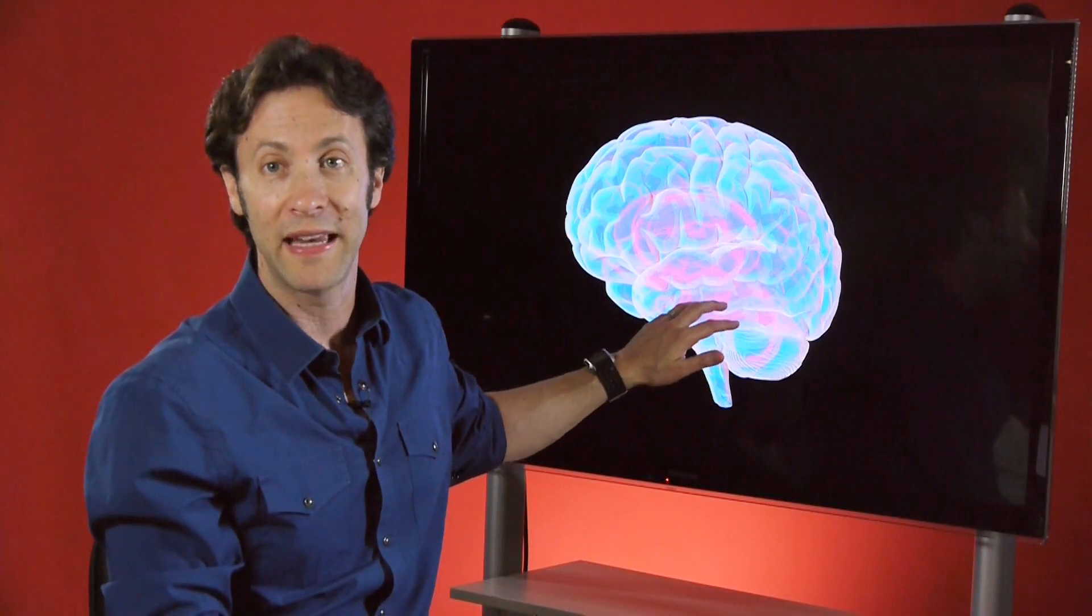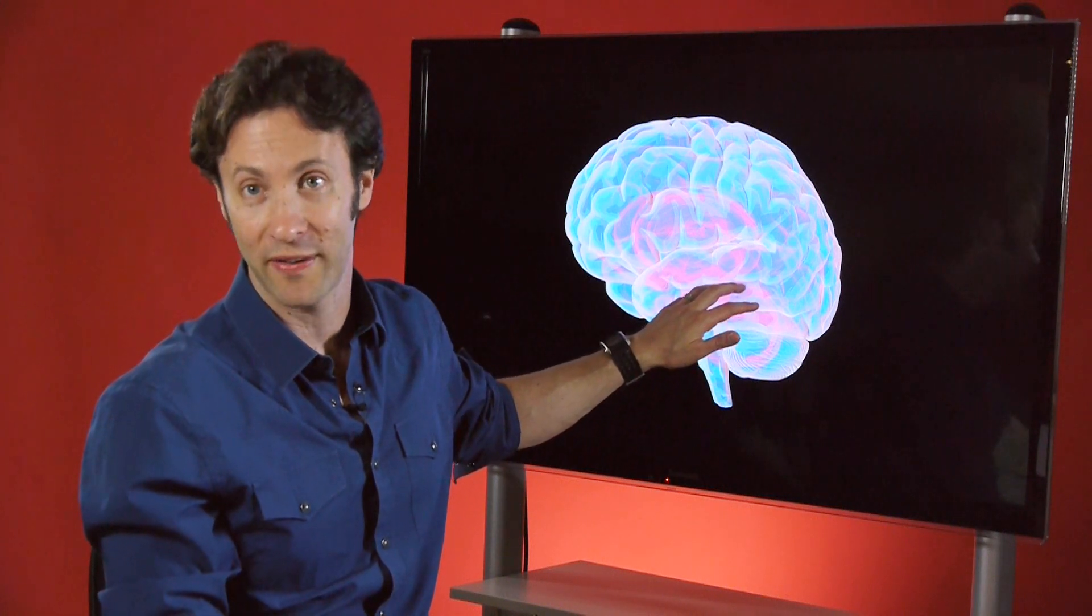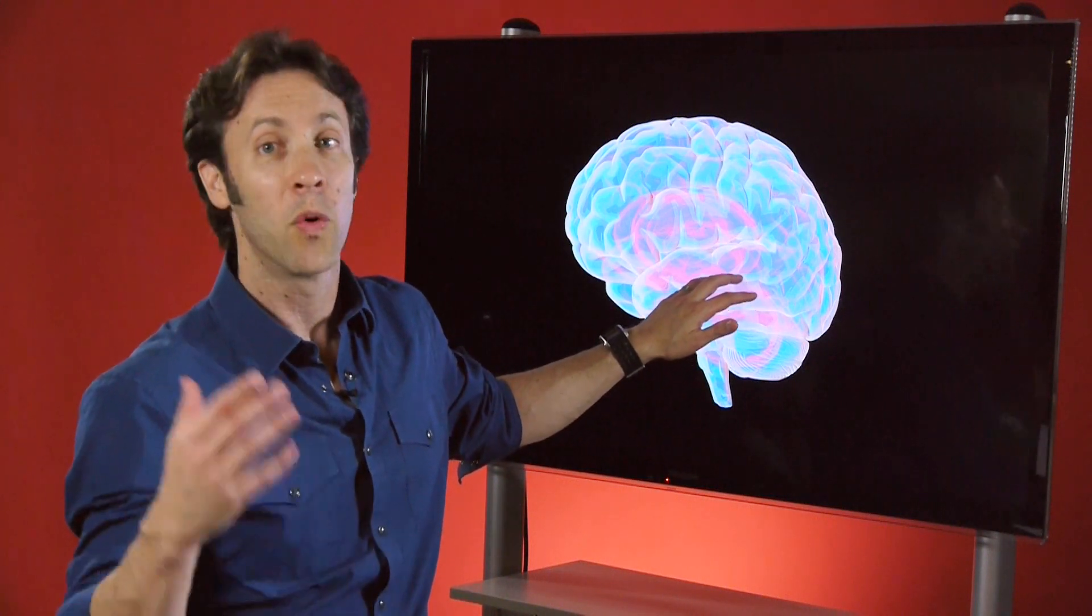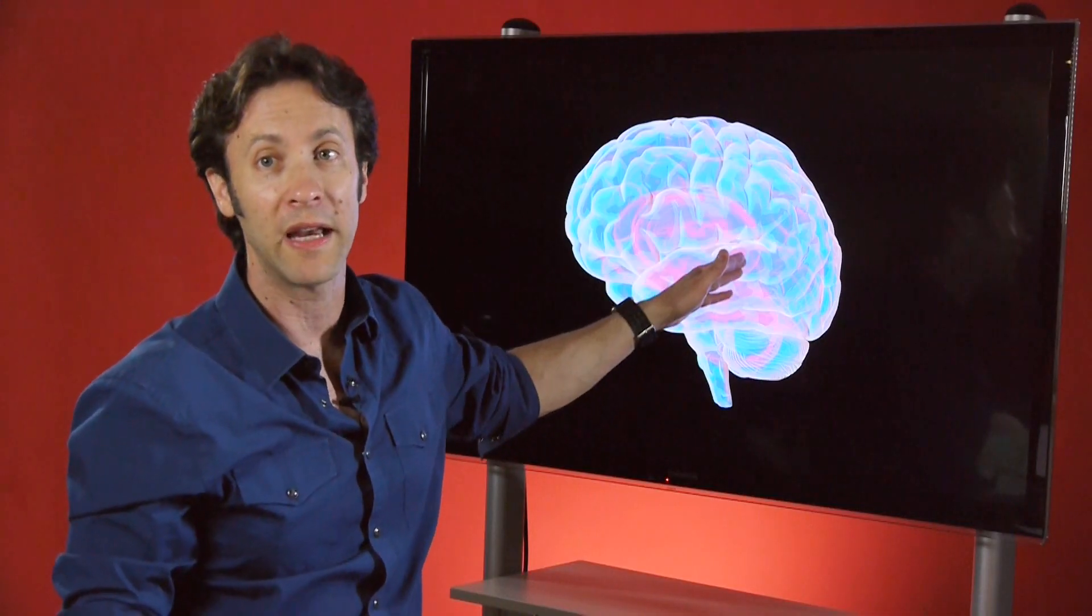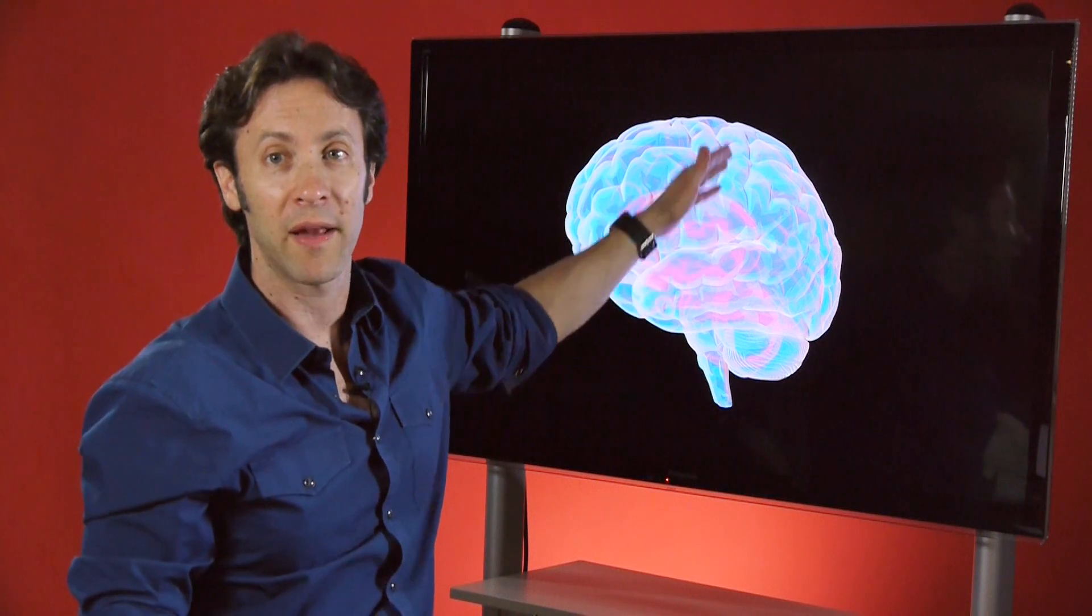On the side here is where hearing takes place. This is where the information that comes in through your ears actually also goes across the brain and gets processed here in the auditory cortex. Along here is the part that processes all the signals from your body.